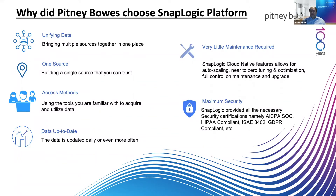Another thing we were able to achieve with the SnapLogic platform is that because all the data is now centrally located, we could make it a single source of truth. Instead of everybody fetching data on their own and doing their own analysis, we brought all the data into one place and combined it. The time a person takes to create an aggregated dataset went down from weeks to days, because all the data from various systems is available at a central location.